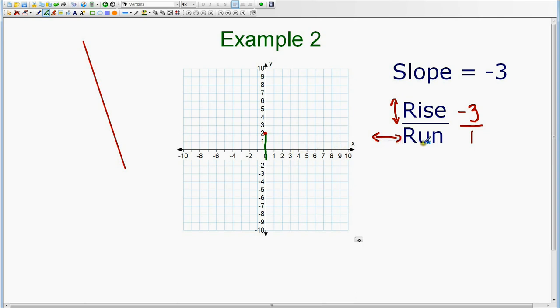From here, we still need to complete the directions by running left or right. So since the 1 is positive, we're going to run to the right, and that is where we're going to put our second point.